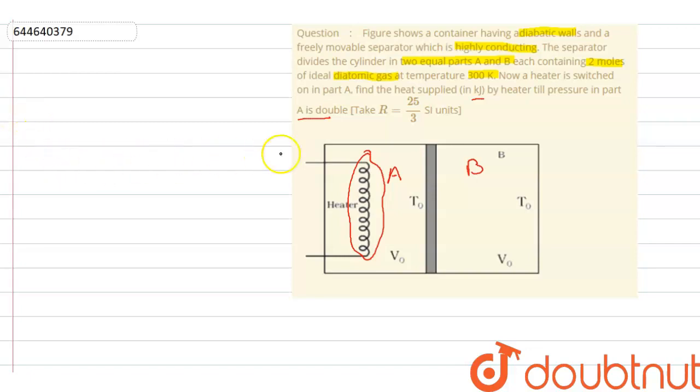First of all, what's given is the walls are adiabatic. That means heat transferred is zero. Q is zero.